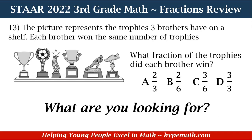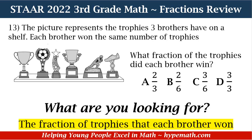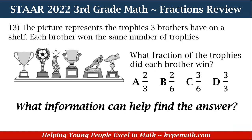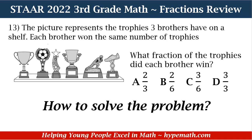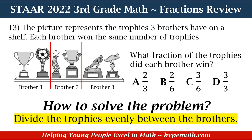In order to solve this problem, the first thing we need to ask ourselves is: what are we looking for? We are looking for the fraction of trophies that each brother won. Now that we know what we're looking for, our next important question is: what information can help find the answer? The information that can help is this: there are three brothers and there are six trophies. In order to solve the problem, we are going to divide the trophies evenly between the brothers.